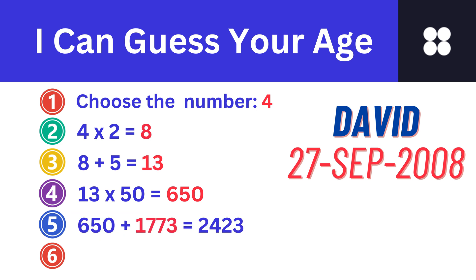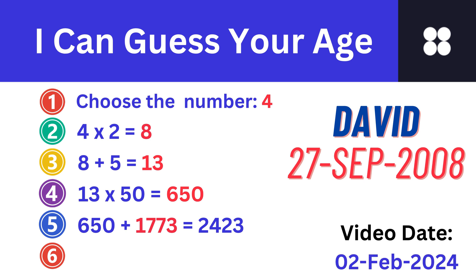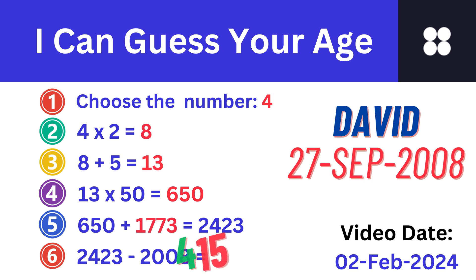Step 5: If you had already celebrated your birthday in 2024, then add 1,774 to the prior result. If your birthday is coming up in 2024, then add 1,773 to the prior result. Let's add 1,773 to 650 and now we get 2,423. Step 6: Subtract the year that they were born from the prior result. Let's subtract 2008 from 2,423 and we get the number 415. We get a 3-digit number.